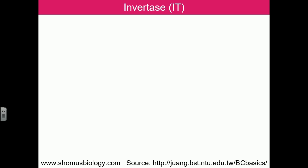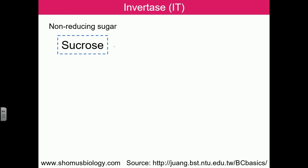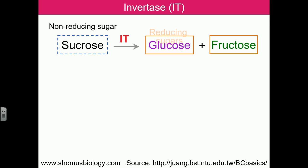Let's look at one specific enzyme: invertase. Invertase is an enzyme that converts a non-reducing sugar into reducing sugars. For example, invertase converts sucrose — a non-reducing sugar — into glucose and fructose, both of which have reducing power.